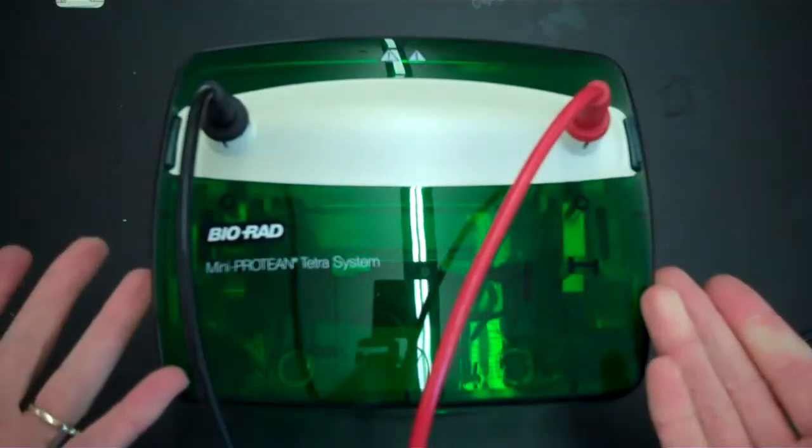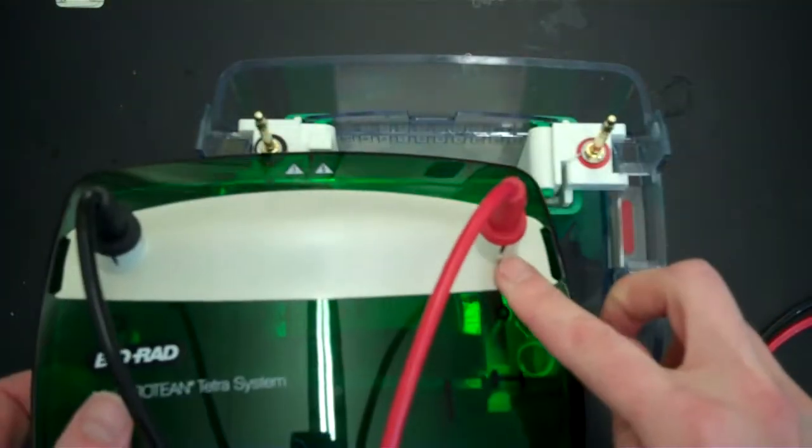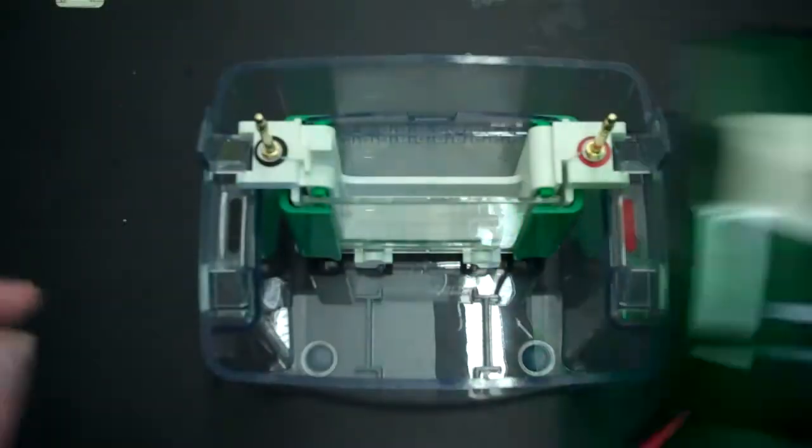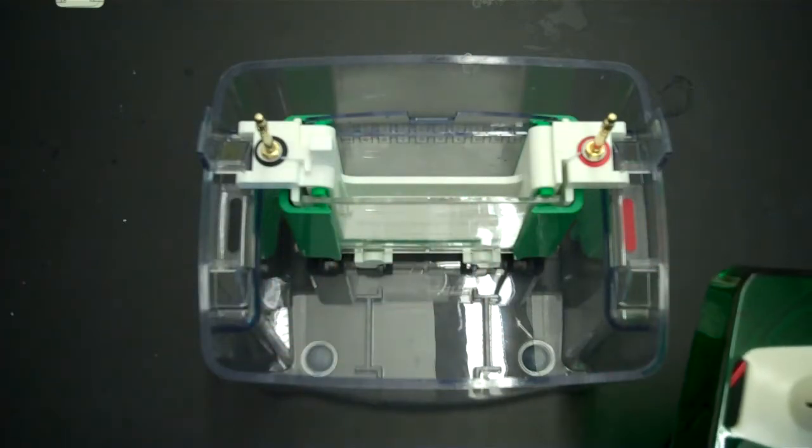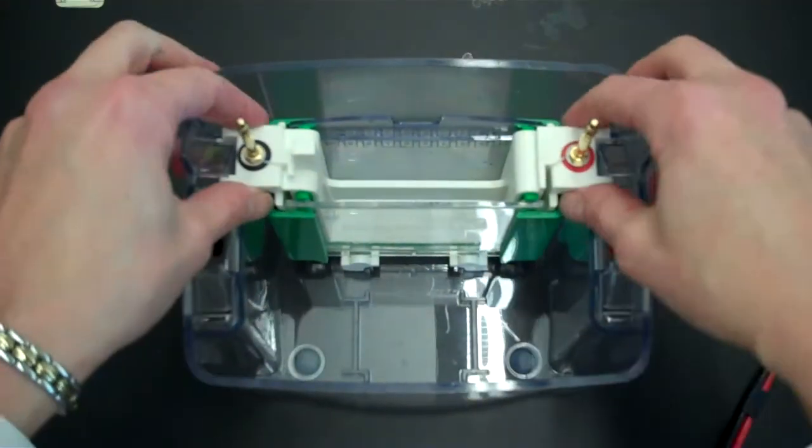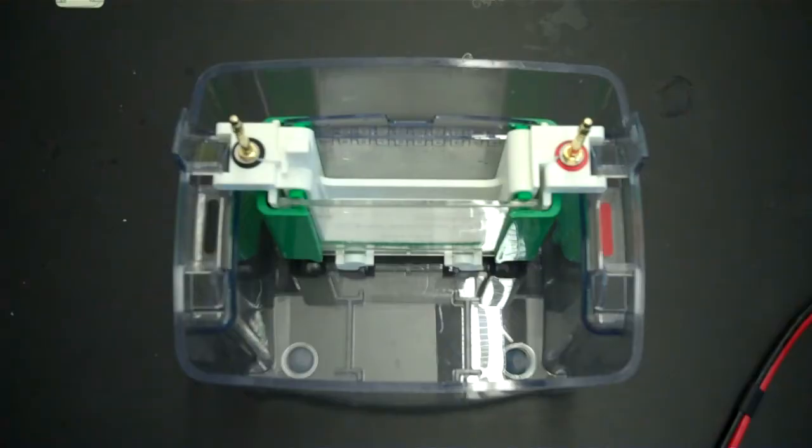And make sure that it all assembles properly so that you have the red that will connect to the red, the black will connect to the black, and that you'll be able to close this. If it turns out that the lid is offset, then simply just rearrange the direction that you place this in the inner chamber. So once you know that it is going to go in properly, go ahead and place it into the electrophoresis box. And you're going to be adding your running buffer to this.